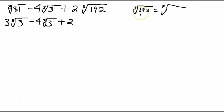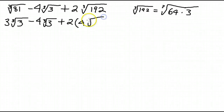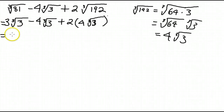What's a perfect cube that goes into 192? The first cube is 8. 8 goes into 192 twenty-four times. But 8 is a perfect cube, which goes into 192 — and 24 itself has a perfect cube factor of 8, meaning 64 is the largest perfect cube. So 192 is 64 times 3. The cube root of 64 is 4. So cube root 192 simplifies to cube root 64 times cube root 3, which is 4 cube root 3. So the full expression is 3 cube root 3 minus 4, which is negative 1 cube root 3, plus 8 — giving us 7 cube root 3.